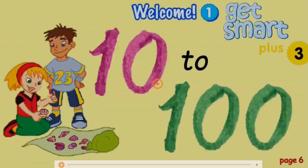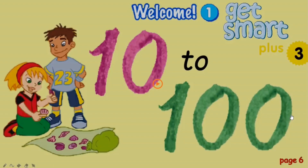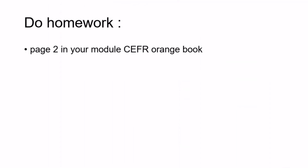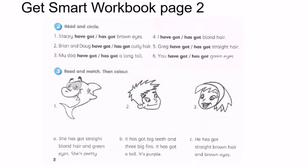Okay, you guys done watching this? Now I want you to take out your book. Take out your module CFR orange book and do page two. Those who have the Get Smart workbook, you do page two also. Continue doing Activity Two and Three.